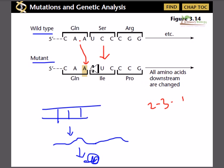What we mean by the frame? Frame means each single codon. One codon means one frame. This is frame one, this is frame two, this is frame three.